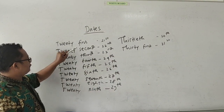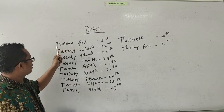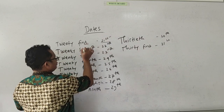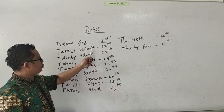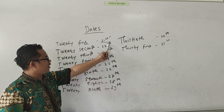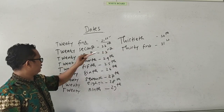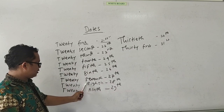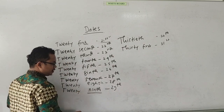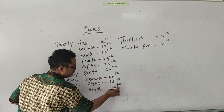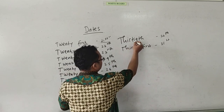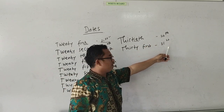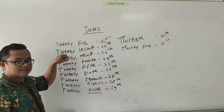Next, 21st, 22nd. Tanggal 22 maka kita singkat dengan 22ND. 23rd, 24th, 25th, 26th, 27th, 28th, 29th. Kembali ke 'ninth': tanggal 29, maka dia 29TH. Next, 30th. Ingat, bukan Y tapi EA, kita tambahkan dengan TH, 30TH. 31st. Jadi itulah tanggal-tanggal yang kita pakai dalam bahasa Inggris.